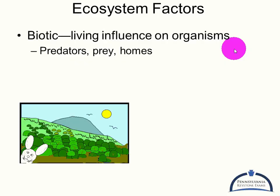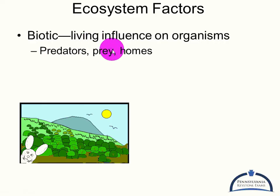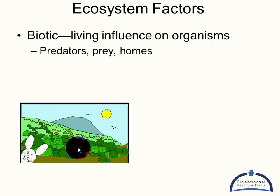When we look at factors of an ecosystem — and these can be limiting factors — we break them into two groups: biotic factors and abiotic factors. For biotic factors, focus on that prefix 'bio,' meaning life. These are things that are actually living and will influence an organism. It could be their food source, their predators, or their homes. In the case of this little bunny, he's probably eating some of this green stuff and may also live in one of these bushes.